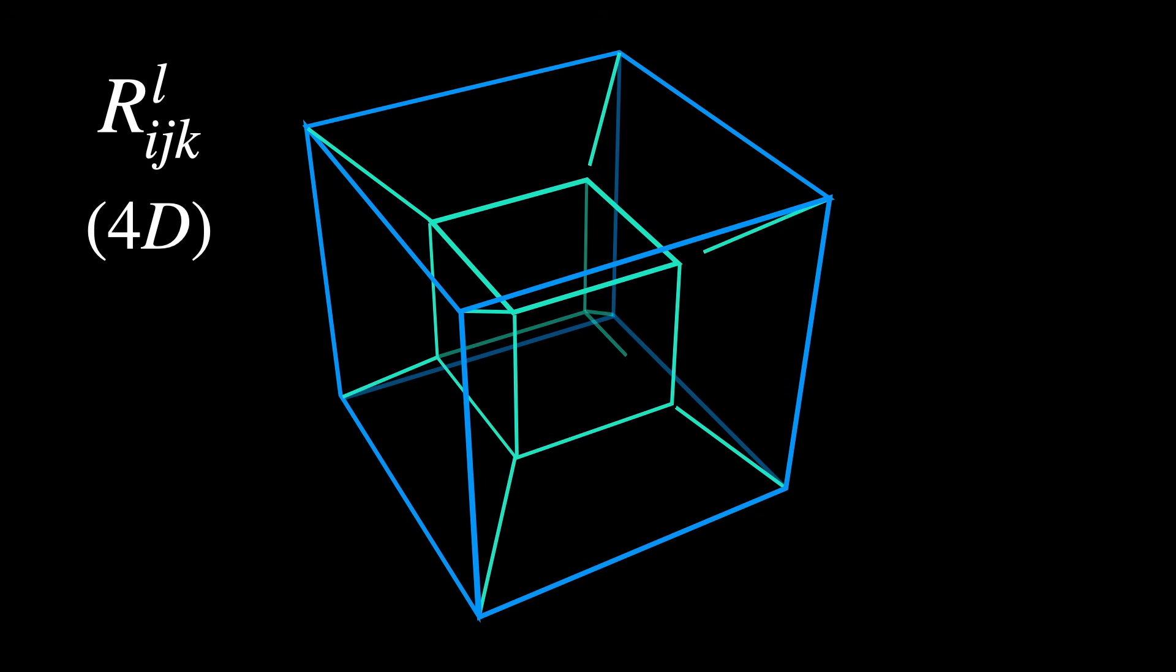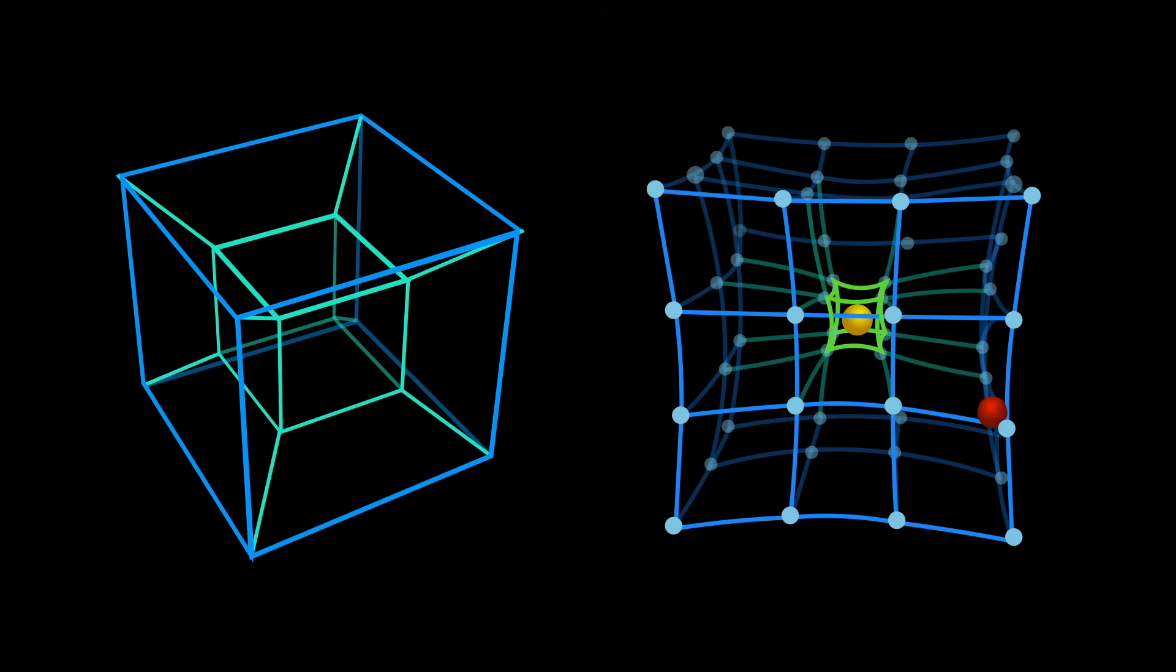We start from the Riemann tensor, which has four indices. It can be thought of as a four-dimensional hypercube. If we're describing the four-dimensional spacetime, for example.